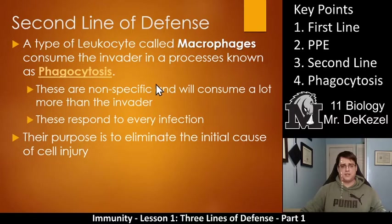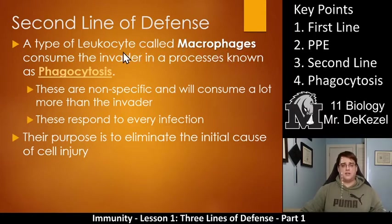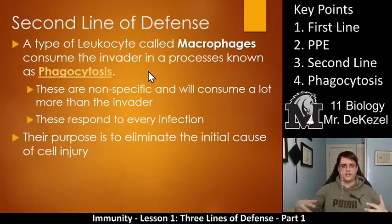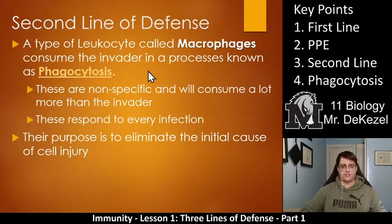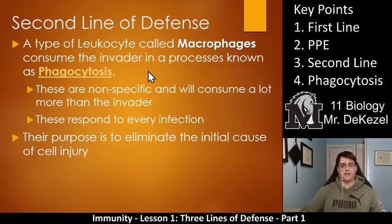The purpose of the inflammatory response is to bring leukocytes, or macrophages, to the infection site. White blood cells are leukocytes, and they come in many types — macrophages being one major type. A type of leukocyte called macrophages consume the invader in a process called phagocytosis. The inflammatory response brings a lot of blood — and therefore a lot of macrophages — to the area. These macrophages are nonspecific, meaning they consume more than just the invader, but with so many present, they're likely to encounter and consume the antigen. That process is phagocytosis, which is key point four.